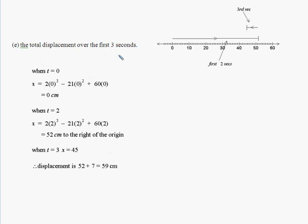For the total displacement after the first three seconds, this is a tricky question. When t equals zero, it was at the origin. After two seconds it's moved to 52 centimeters to the right of the origin. But after two seconds, because it was at rest at two seconds, it stopped and moved in a negative direction.